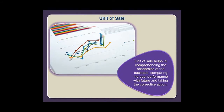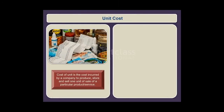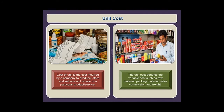Unit cost is the cost incurred by a company to produce, store, and sell one unit of sale of a particular product or service. The unit cost denotes the variable cost, such as raw material, packing material, sales commission, and freight.